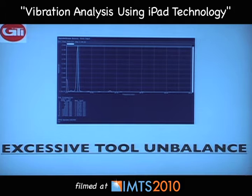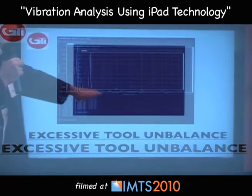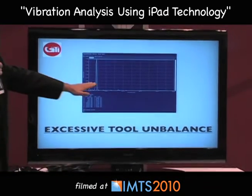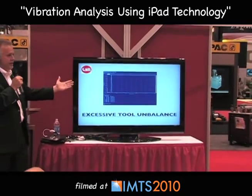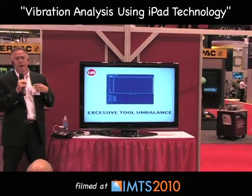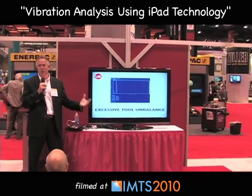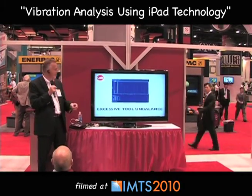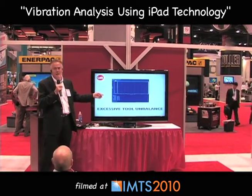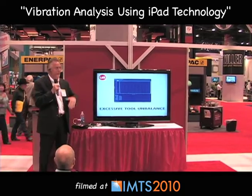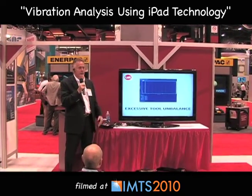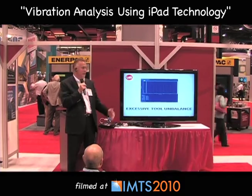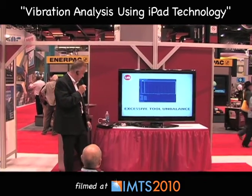Here's another example: no bearing frequencies, everything looks good, no misalignment problems — just a high imbalance spike. This is indicative of something unbalanced being applied to a motor, spindle, or any machine. We can quickly cure this problem by either balancing the unit or putting a balanced tool or pulley back on the rotating component.